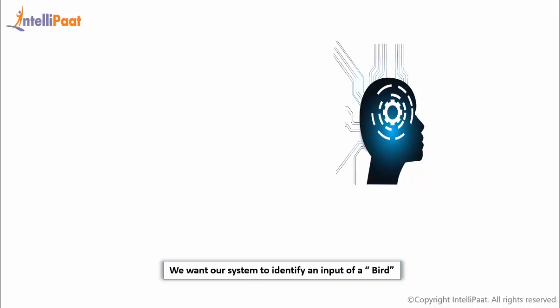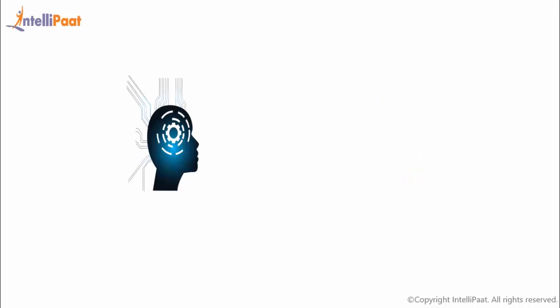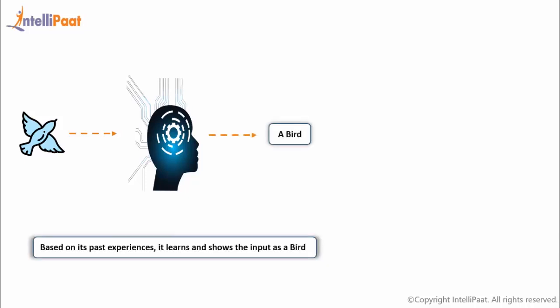We are forming patterns and want our system to follow the same pattern. After all this, when we give it test data related to a bird, our system would learn from past experiences and tell us that it is a bird. This is how machine learning works.